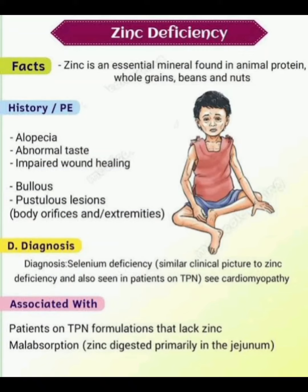In this video, I am discussing zinc deficiency. The disease developed is called acrodermatitis enteropatica. Zinc is an essential mineral found in animal protein, whole grains, beans, and nuts. The presentation of zinc deficiency or acrodermatitis enteropatica includes alopecia.